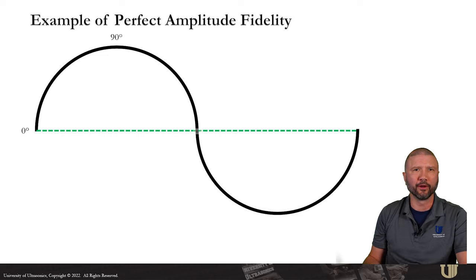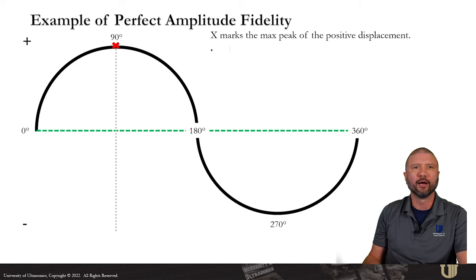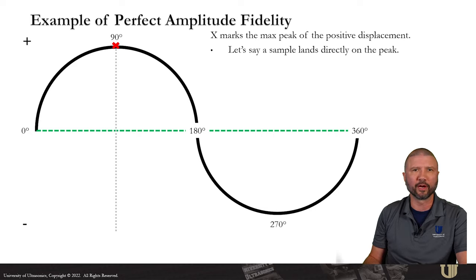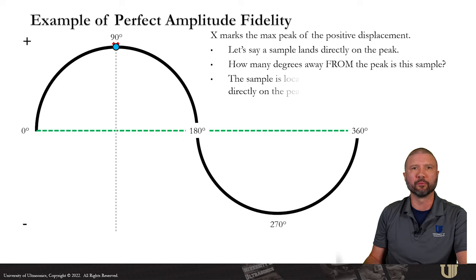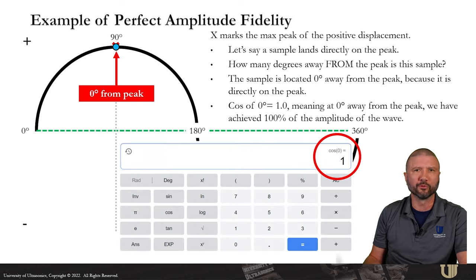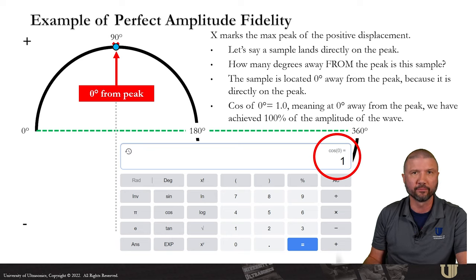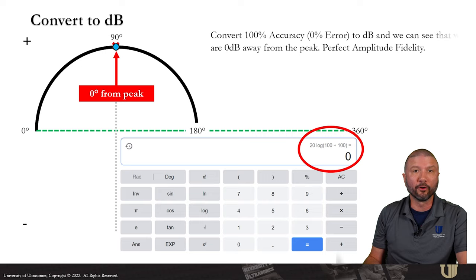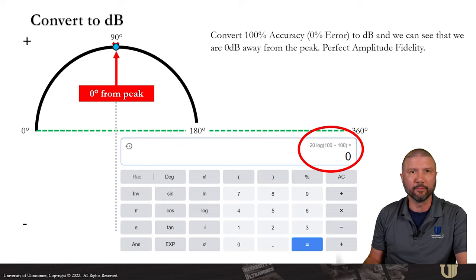Now let's consider a scenario. We've got our sine wave here. The max peak of this sine wave is marked with the red x. Let's say a sample lands directly on the peak. How many degrees away from the peak is the sample? Well, the sample is going to be located zero degrees away from the peak because it is directly on the peak. Cosine of zero equals one, meaning at zero degrees away from the peak, we have achieved 100% of the amplitude of the wave. Convert 100% accuracy or zero percent error to a dB and you can see that we are zero dBs away from the peak. We have achieved perfect amplitude fidelity.